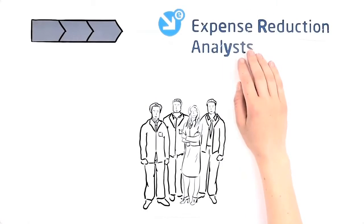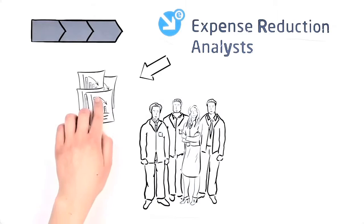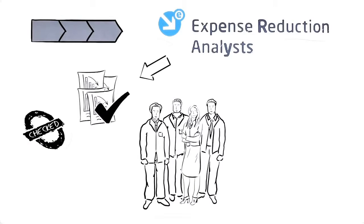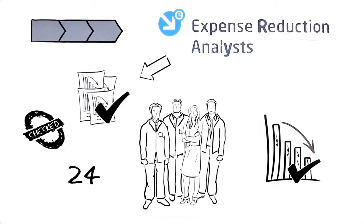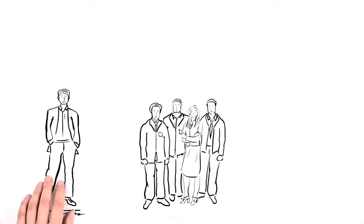In the last step, the Expense Reduction Analysts consultants implement the options chosen by John and monitor the progress over a minimum period of 24 months. This ensures that all estimated savings are achieved, supplier performance is maintained, and internal buying habits are improved.